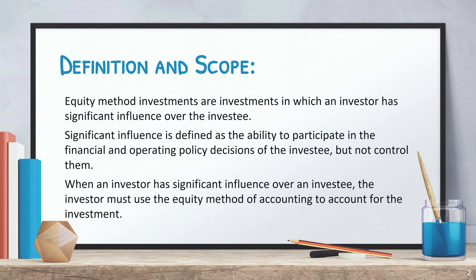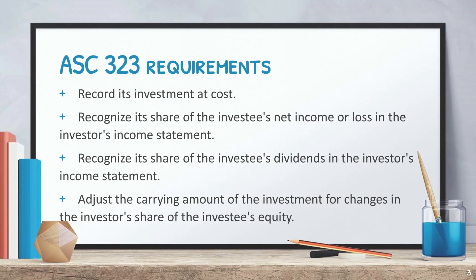When an investor has significant influence over an investee, the investor must use the equity method of accounting to account for the investment. The equity method of accounting requires the investor to record its investment at cost and recognize its share of the investee's net income or loss in the investor's income statement.